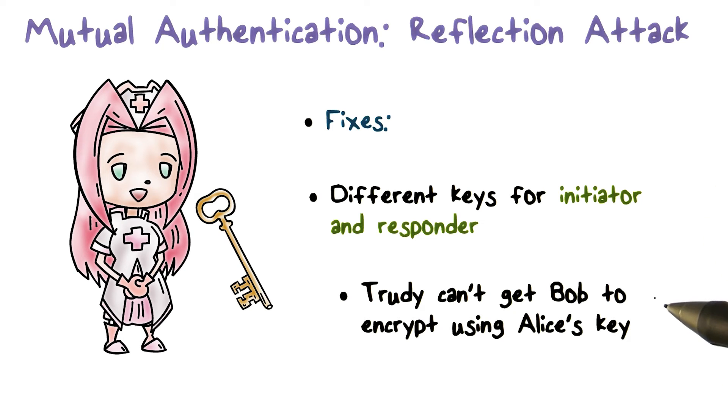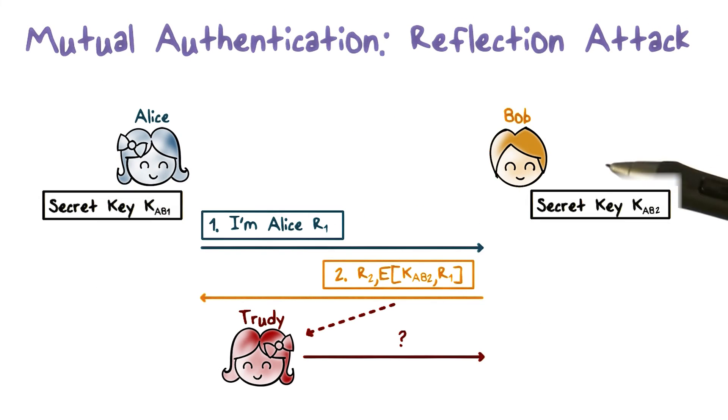The result is that the ciphertext that Trudy gets from Bob cannot be presented as a ciphertext from Alice because these two ciphertexts should be using two different keys. That is, there are two shared keys being used. Say Alice used KAB1 and Bob used KAB2.